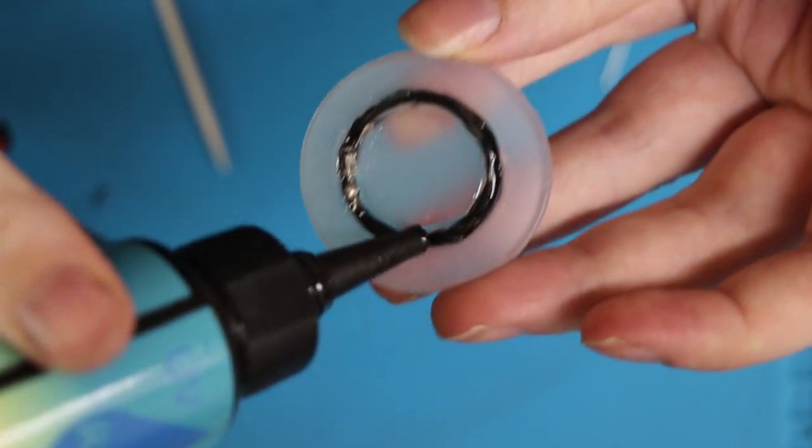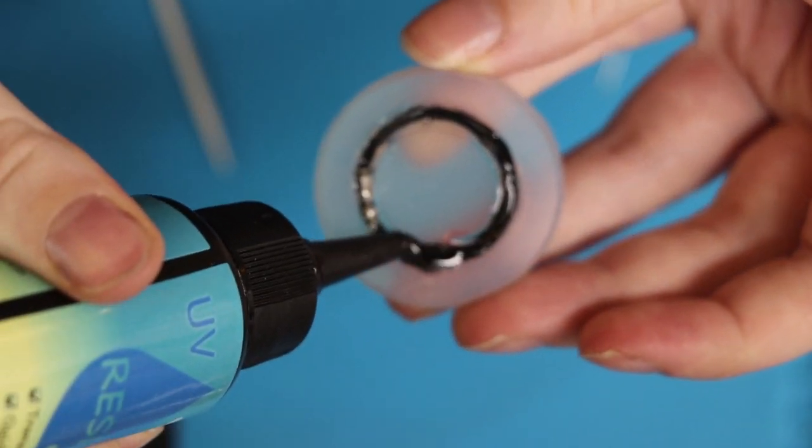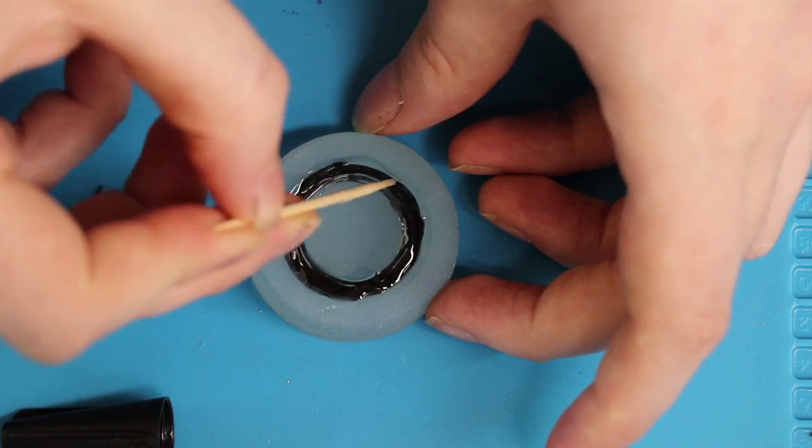Now to cast in resin. I poured in my resin carefully, and then with a toothpick made sure everything was pushed down and there were no air bubbles.